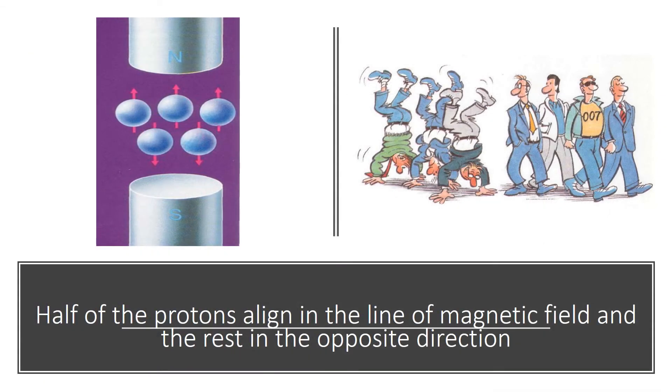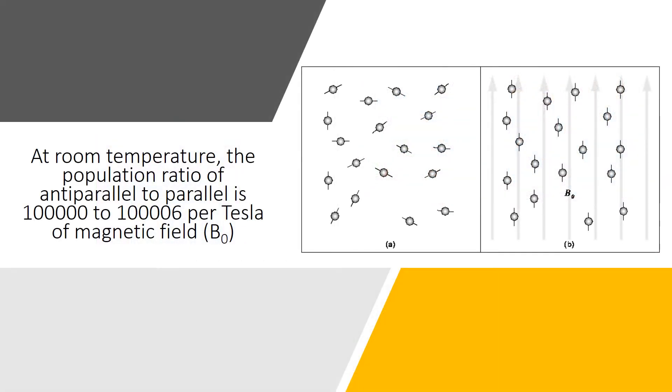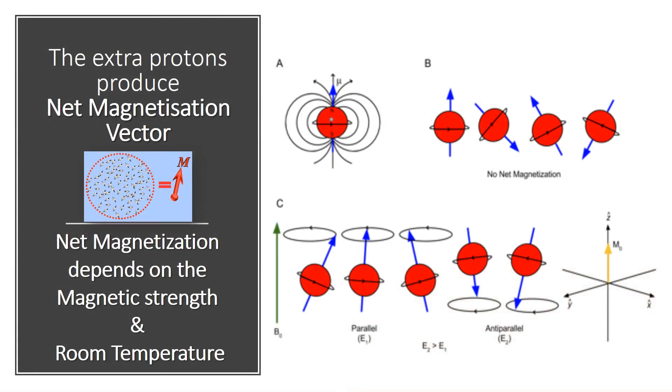Half of the protons align in the line of magnetic field and the rest in the opposite direction. At room temperature, the population ratio of anti-parallel to parallel is 100,000 to 100,006 per Tesla of magnetic field. The extra protons produce net magnetism vector M. Net magnetization depends on the magnetic strength and room temperature.